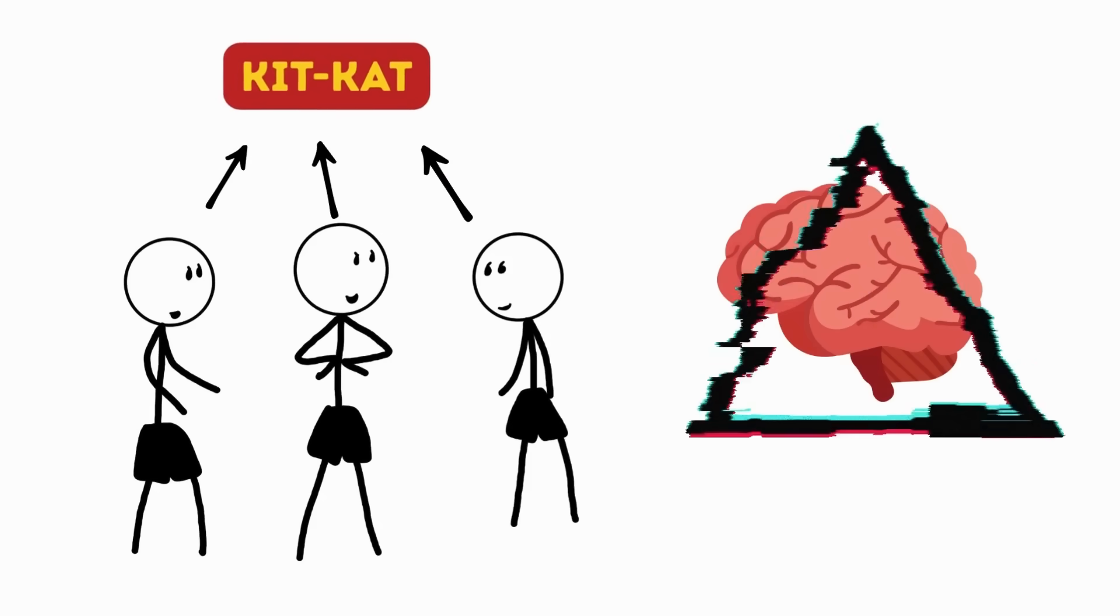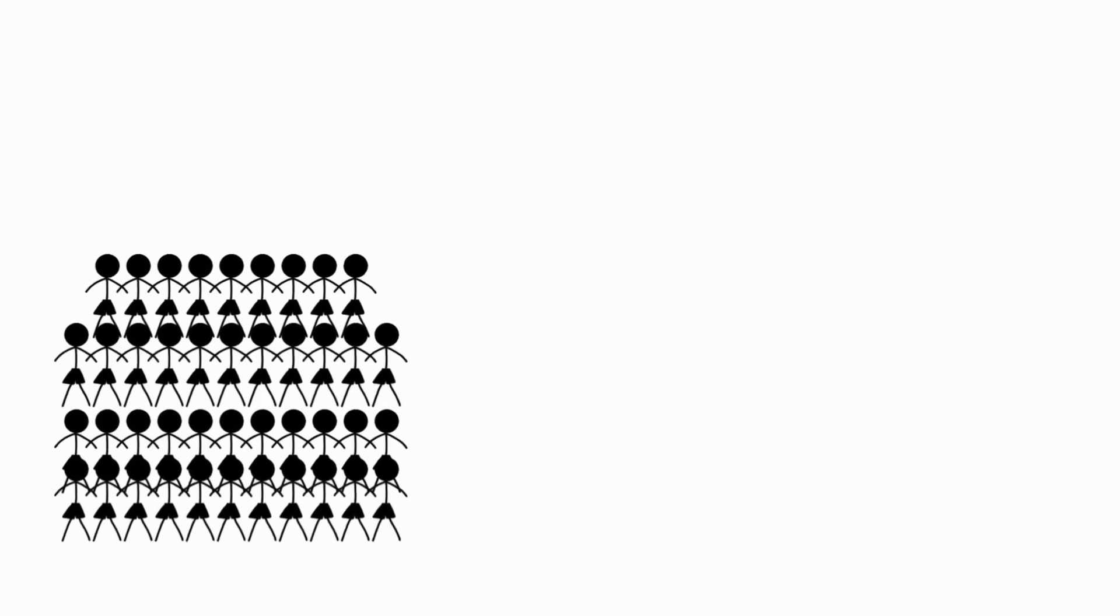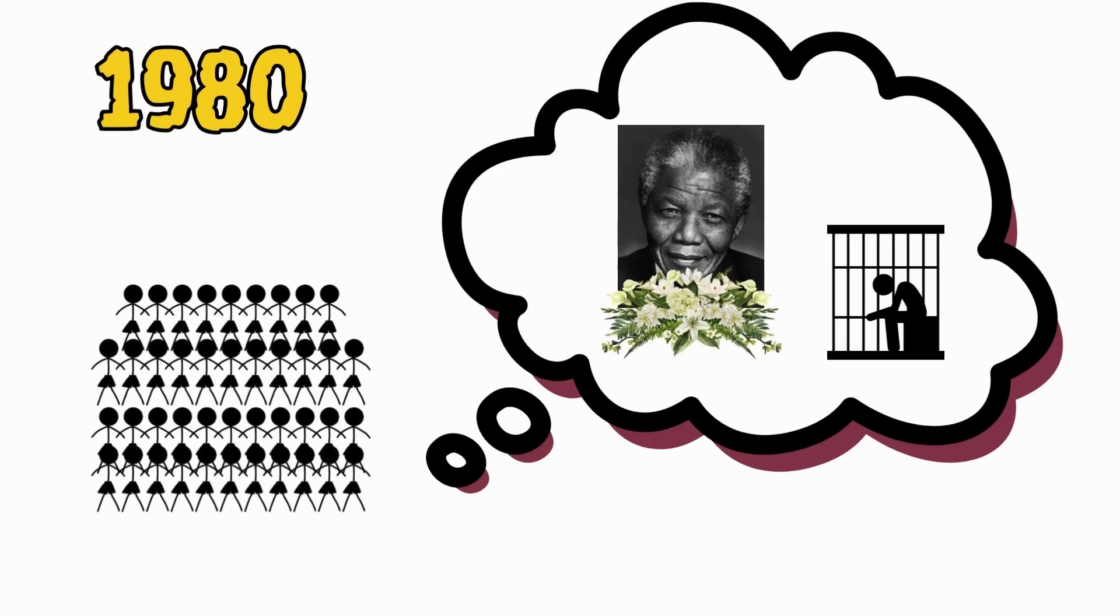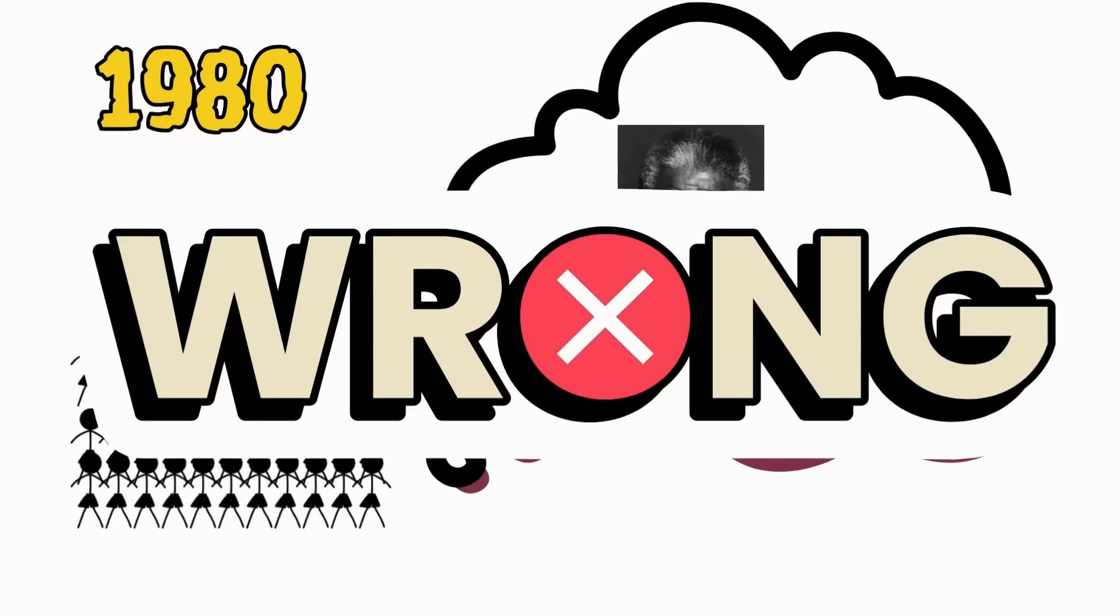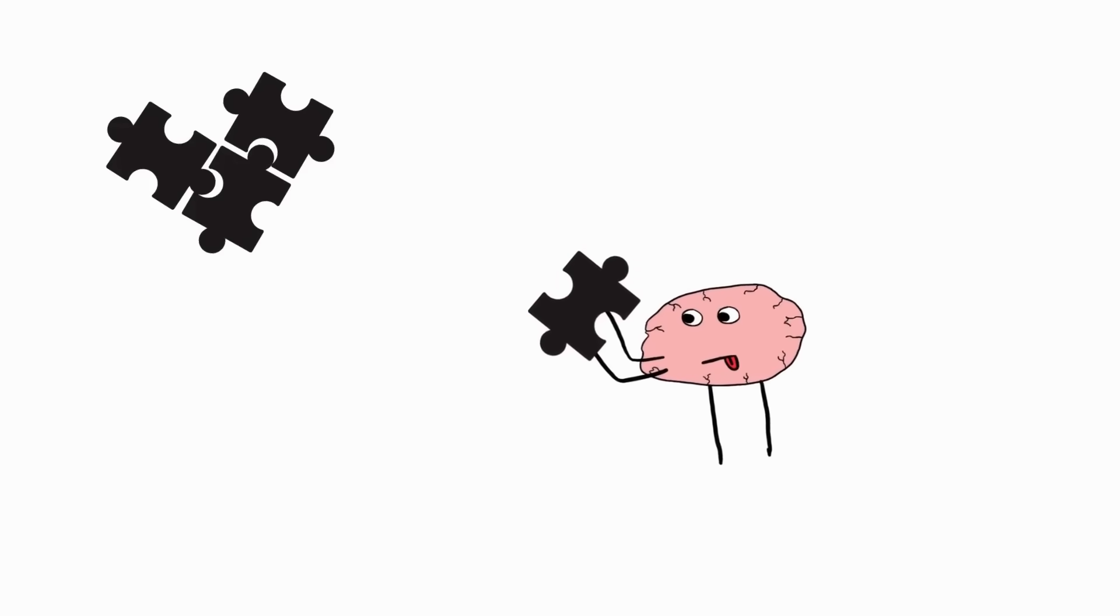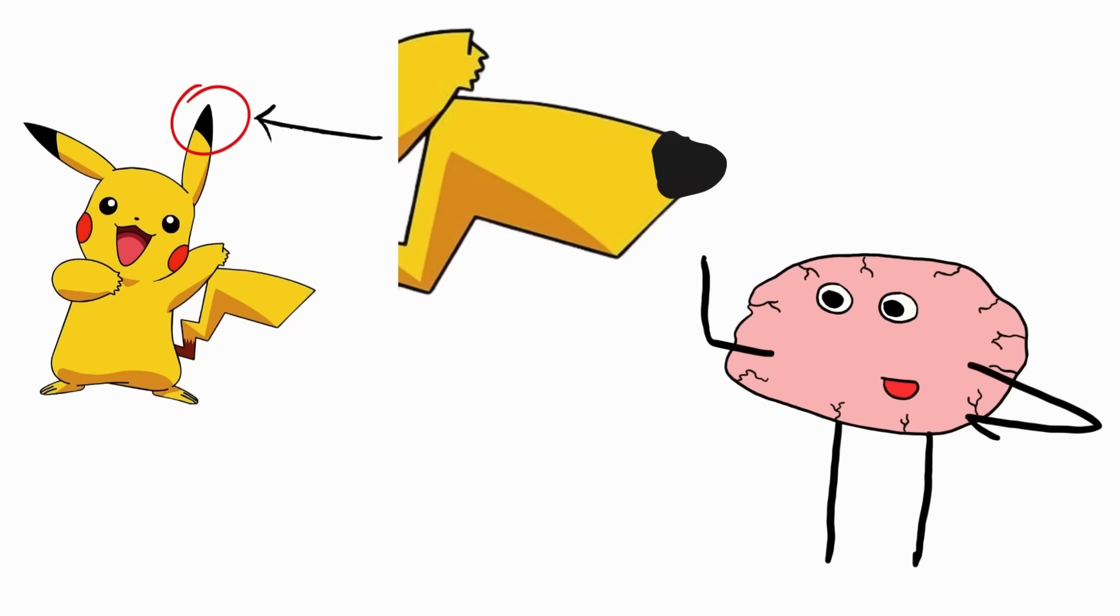a memory glitch in which a group of people confidently misremember the same detail. The name comes from people who recalled Nelson Mandela dying in prison in the 1980s when, in reality, he didn't. The Mandela Effect happens due to brain shortcuts. You fill in gaps with familiar patterns, for example, assuming that Pikachu's tail matches his ears.